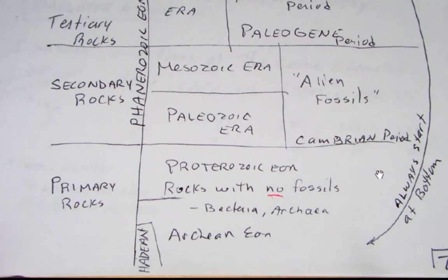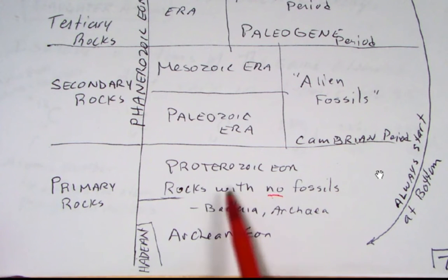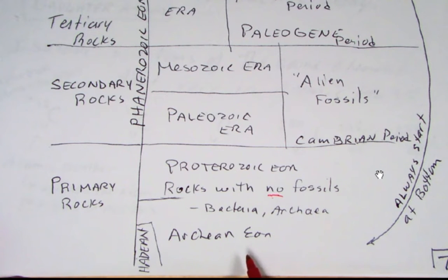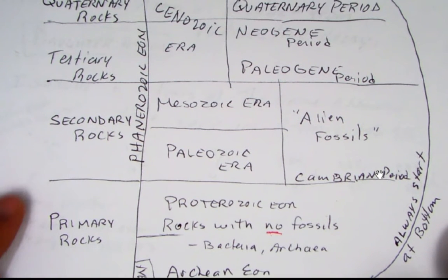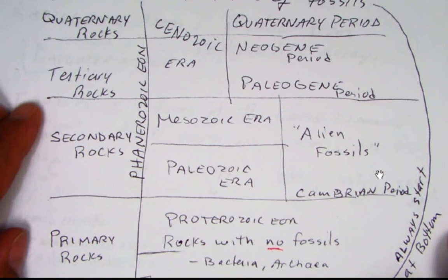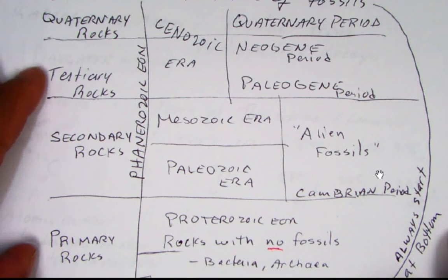Today, with our new technology, we do find bacteria, archaea, and soft-bodied organisms, but primarily the rocks down here would be the rocks with very little to no fossils. As we go further up, they had rocks with fossils, and they called those secondary rocks, tertiary rocks, and quaternary rocks — so these are the rocks with fossils.